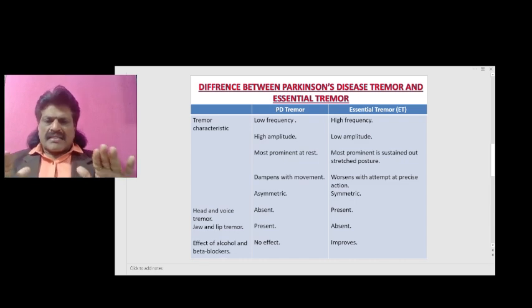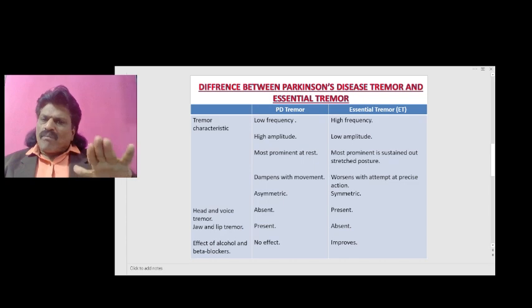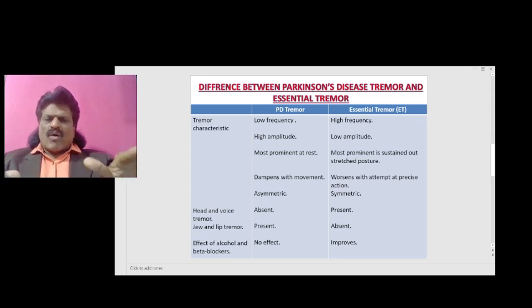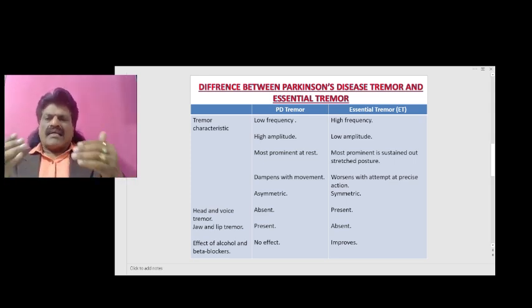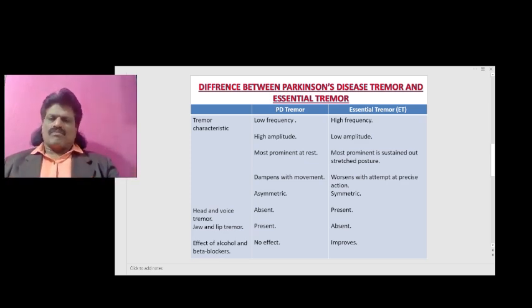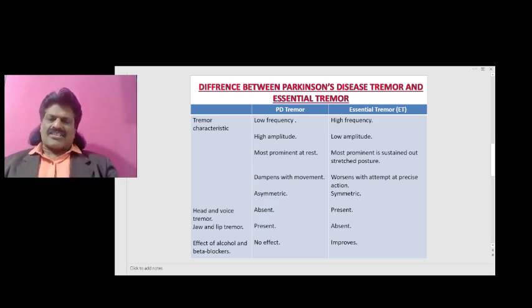Parkinson's disease tremor is most prominent at the wrist at rest, whereas essential tremor is most prominent during a sustained outstretched posture. Parkinson's disease tremor dampens with movement, while essential tremor worsens with attempt at precise action.